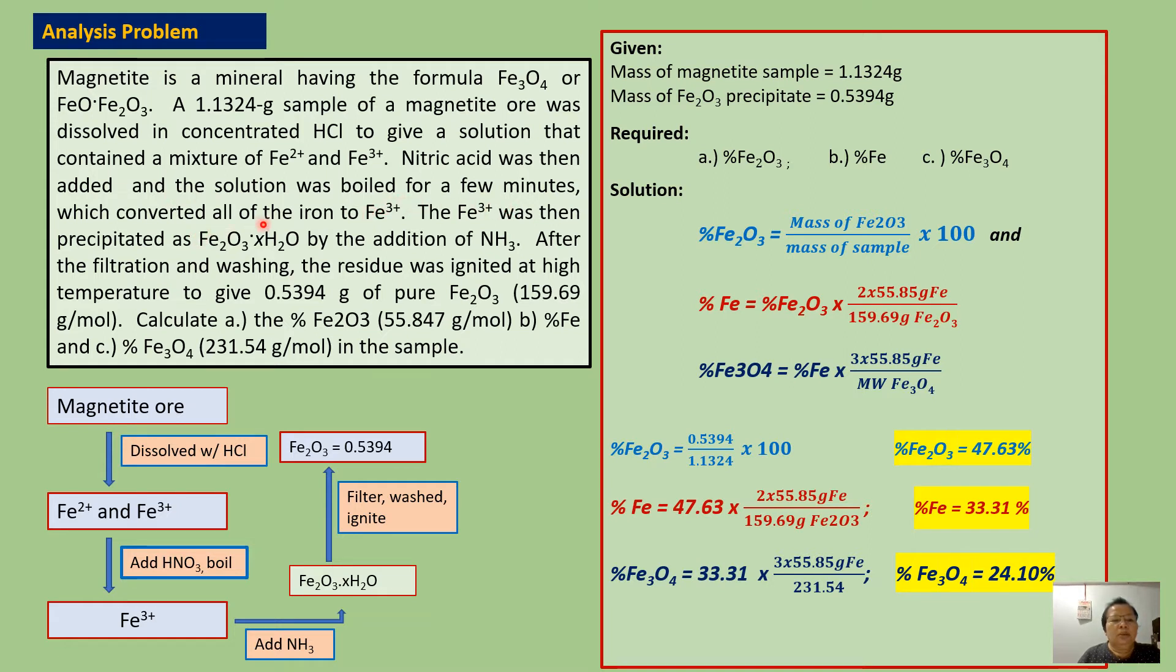which converted all of the iron to Fe3+ ions. The Fe3+ ion was then precipitated as hydrated ferric oxide by the addition of ammonia. After filtration and washing, the residue was ignited at high temperature to give 0.5394 grams of pure Fe2O3. Calculate the percent Fe2O3, percent iron, and percent magnetite in the sample.